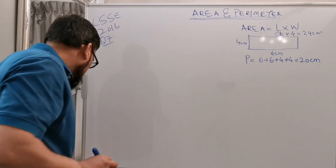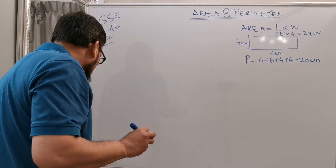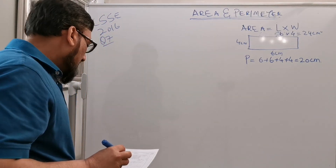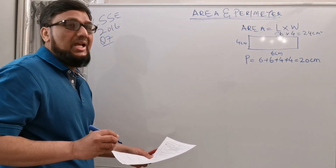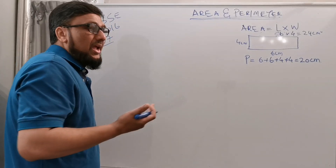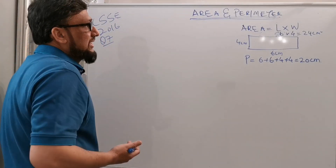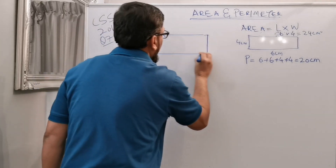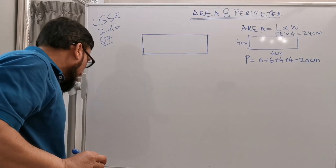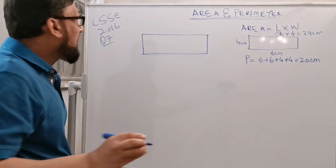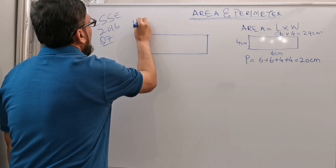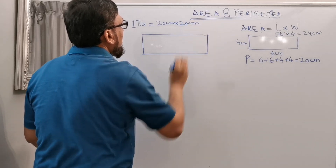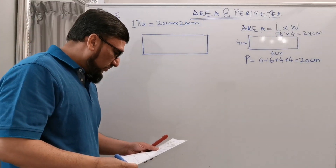It says John is using square ceramic tiles, each 20 centimeters by 20 centimeters, to cover a rectangular worktop in his greenhouse. The shape is rectangular, and one tile equals 20 centimeters by 20 centimeters.